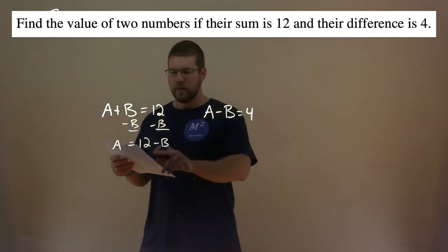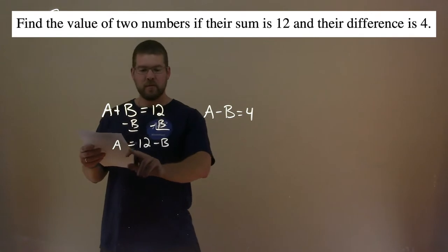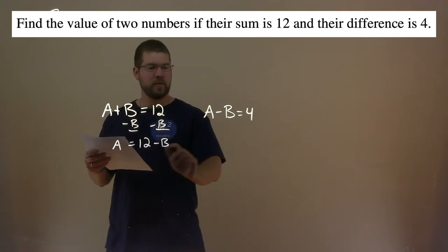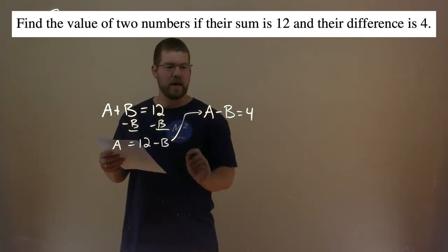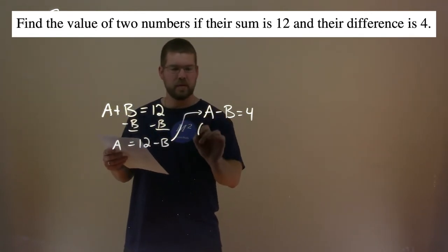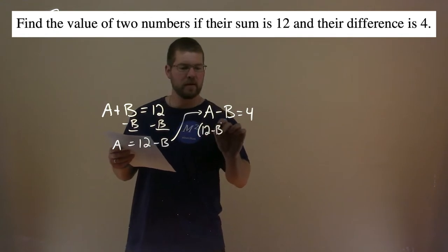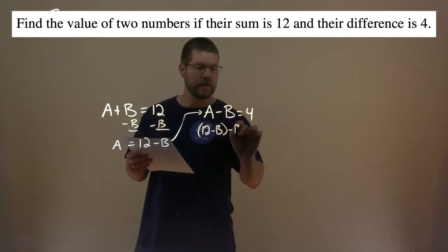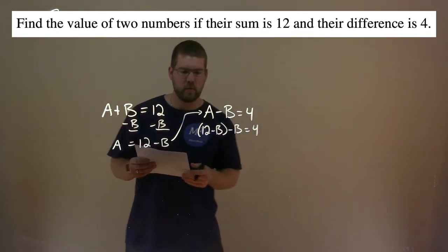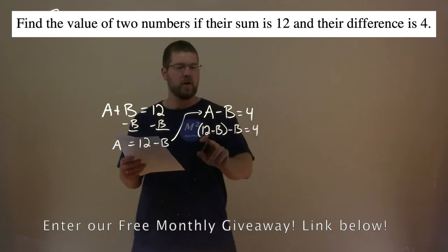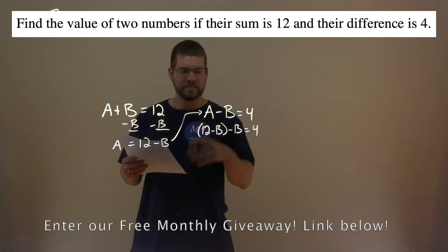What we're going to do is take this A value, being 12 minus B, and plug it in for that A. We have 12 minus B, minus B equals 4. So then 12 minus B minus B equals 4.